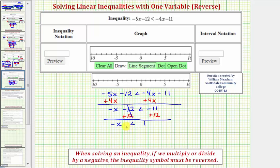Now here we have negative x is less than 1. We can think of this as negative 1x is less than 1. So to solve for x, we need to divide both sides by negative 1. Either case, we'll have to reverse the inequality symbol.